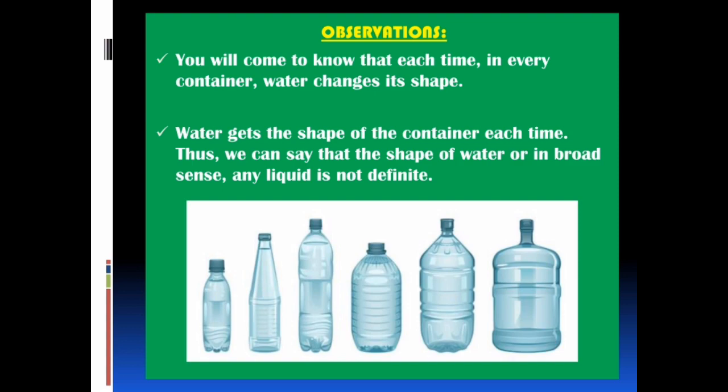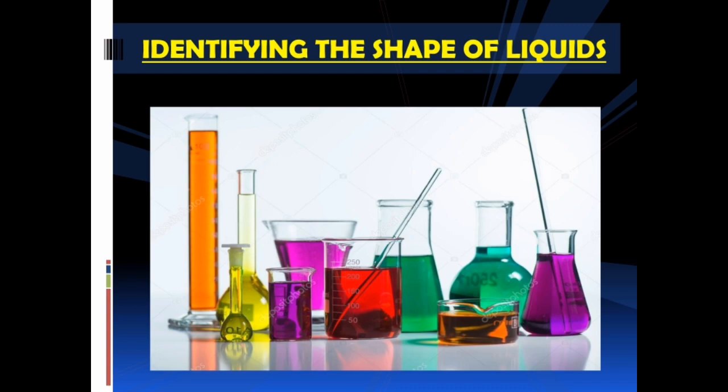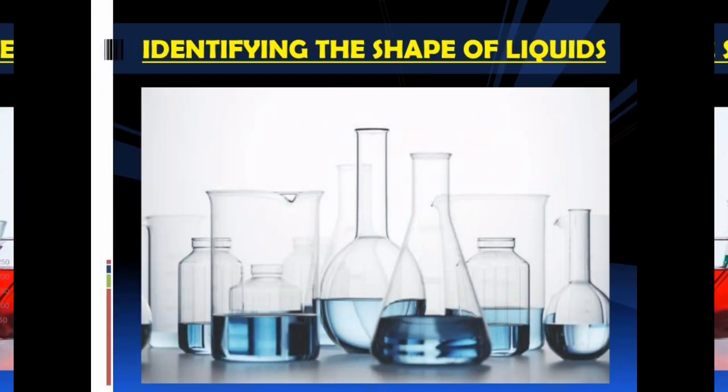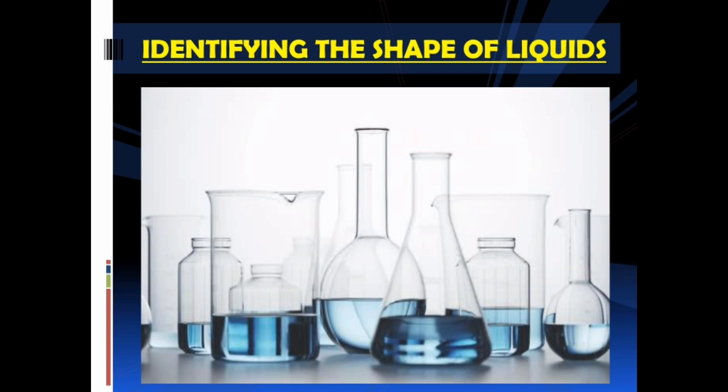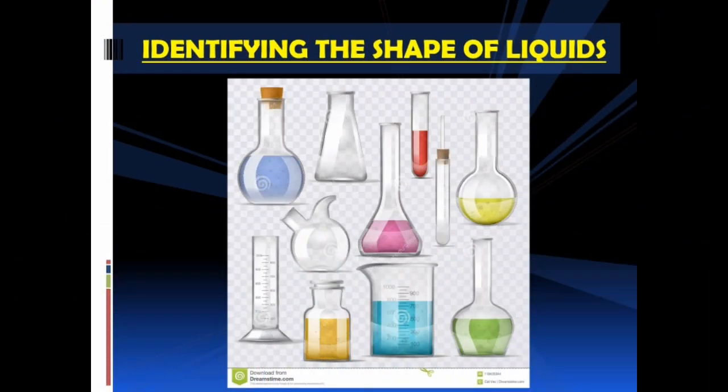The following observations can be made: each time, in every container, water changes its shape — water gets the shape of the container. Thus, we can say that the shape of water, or in a broad sense any liquid, is not definite. You can see different water bottles in the picture; water gets those bottle shapes each time. Thus, we say liquids have no definite shape. These colorful pictures with different colored liquids in different containers clearly confirm that the shapes are different.